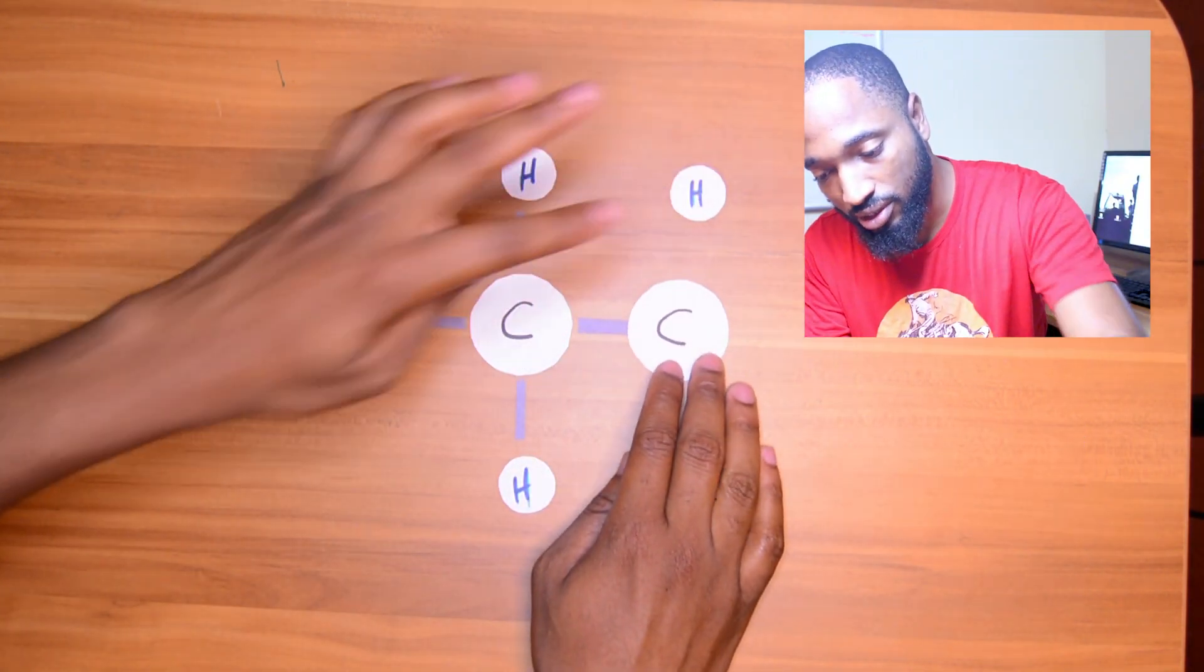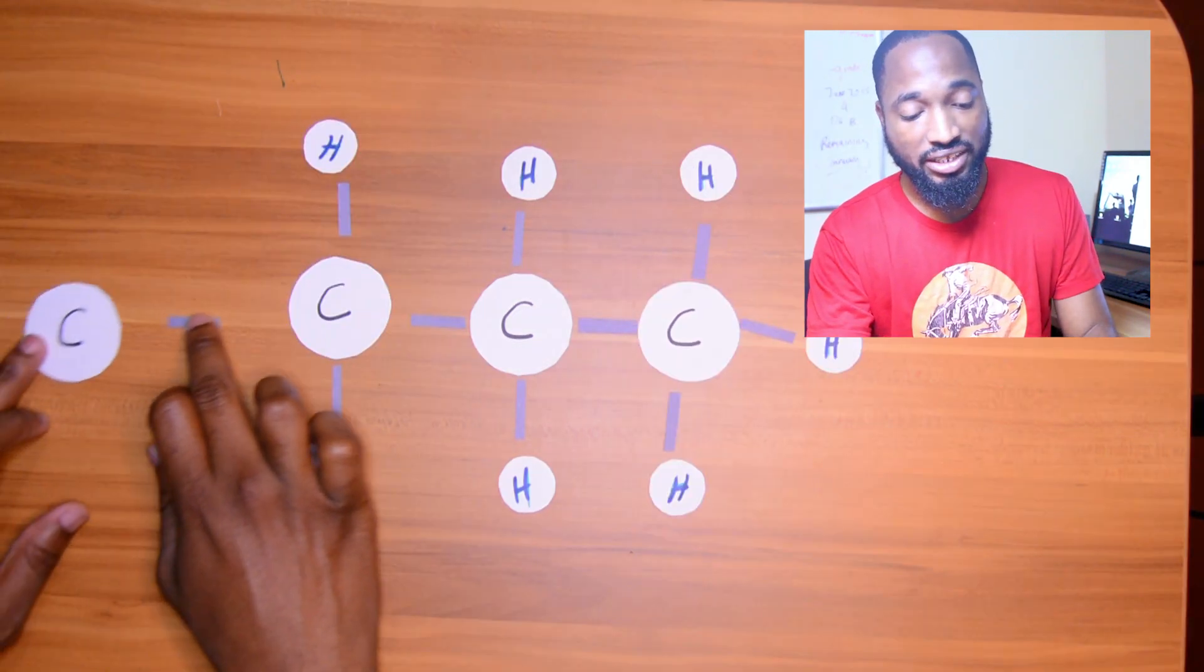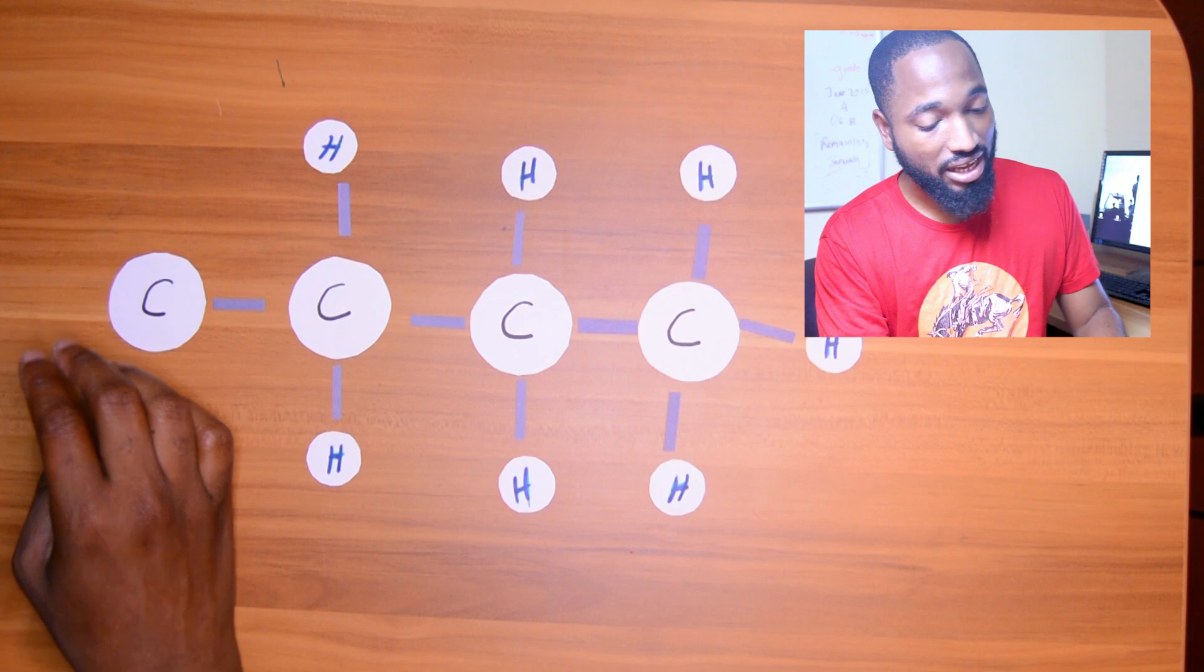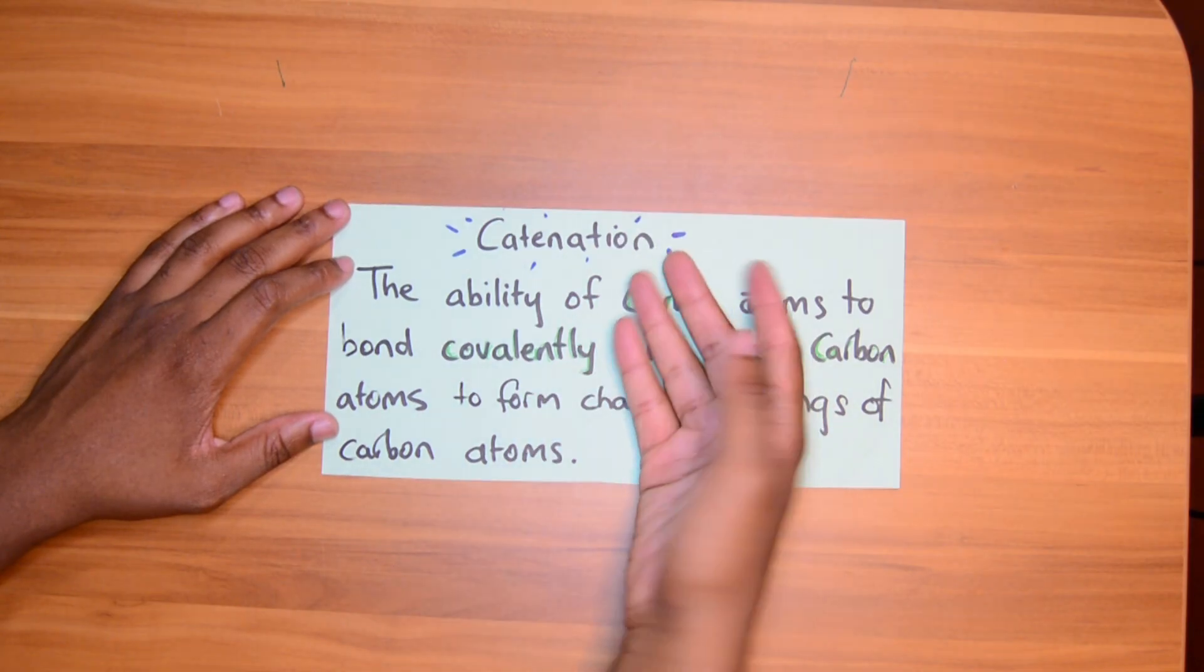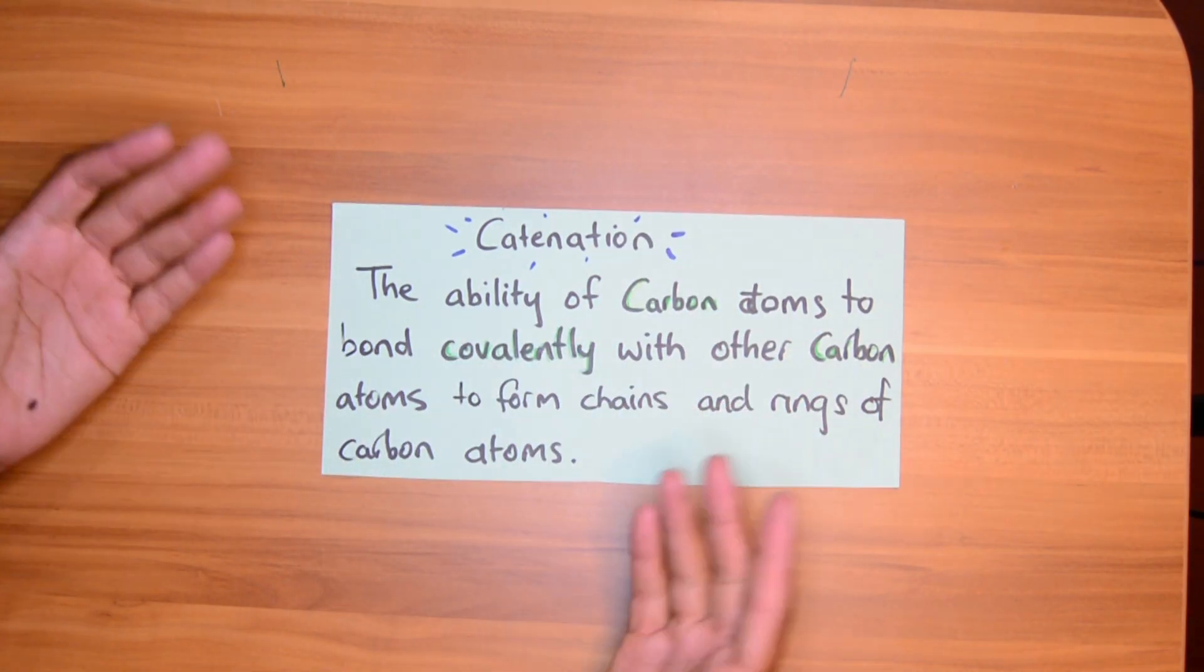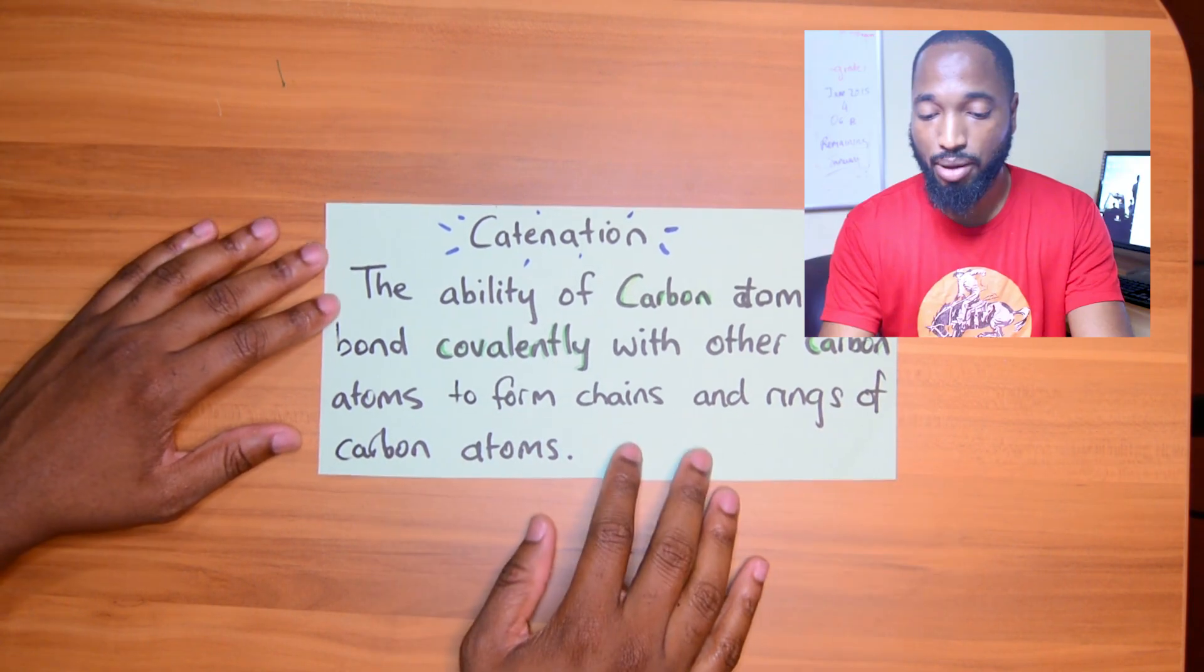Carbon also loves to bond with itself. This ability for carbon to just keep bonding with itself continuously, we have a word for that. Catenation, the ability of carbon atoms to bond covalently with other carbon atoms to form chains and rings of carbon atoms.